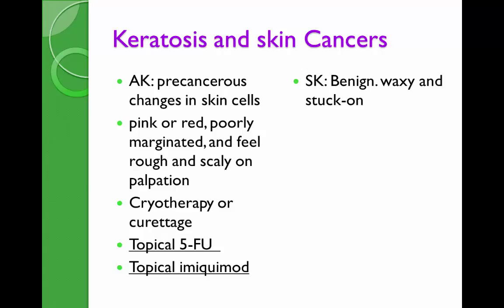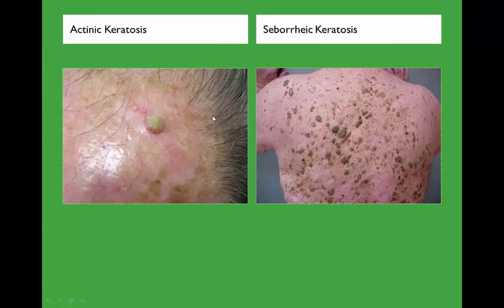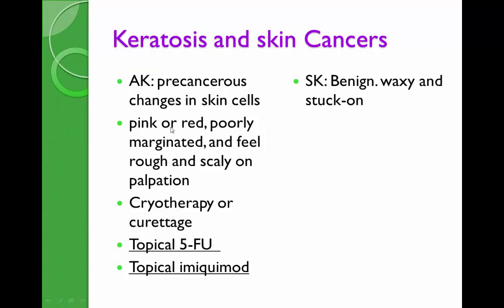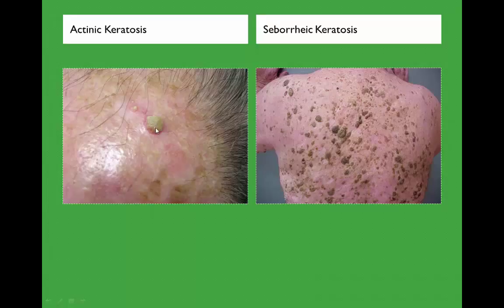Actinic keratosis is a pre-cancerous skin cell lesion that is pink or red, poorly marginated, and feels rough and scaly. In contrast, seborrheic keratosis is benign and appears waxy with a 'stuck-on' look. Actinic keratosis is rough on palpation; seborrheic keratosis is brown with a stuck-on appearance — benign versus pre-cancerous.